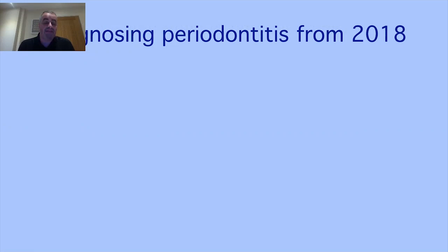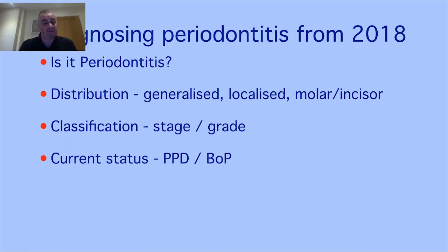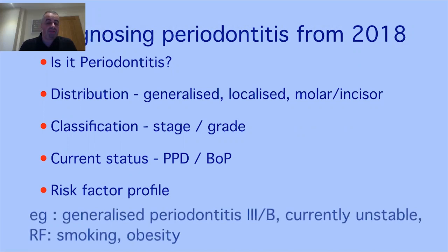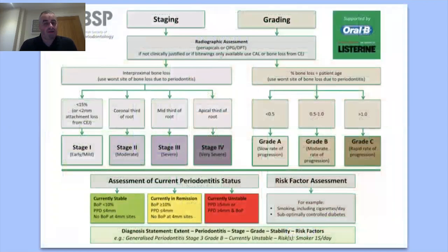Moving forward from the 2018 initial presentation, when looking at a case we ask: is it periodontitis? If so, is it localized, generalized, or molar-incisor pattern? Then we assess the stage and grade of disease, comment on current health status — stable, in remission, or unstable — and finally add the risk factor profile contributing to this patient's disease. The resulting diagnostic statement isn't massively different from what we used to produce historically.